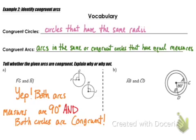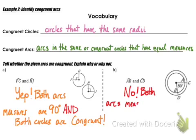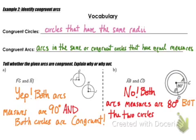Let's check out the next example: arc AB, which is on the inner circle, and arc CD, which is on the outer circle. Are these congruent? No. Both arcs measure 80 degrees, but the two circles are not congruent because they have non-equal radii. You can see that the radius to B on the first circle is a little bit shorter than the radius that extends all the way to D. Therefore, those circles are not congruent.